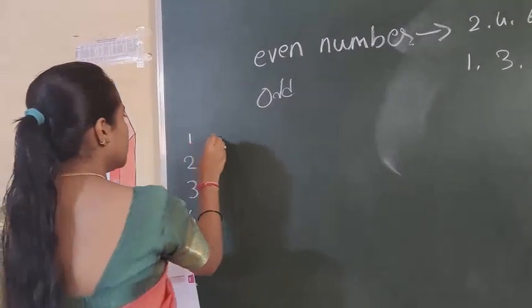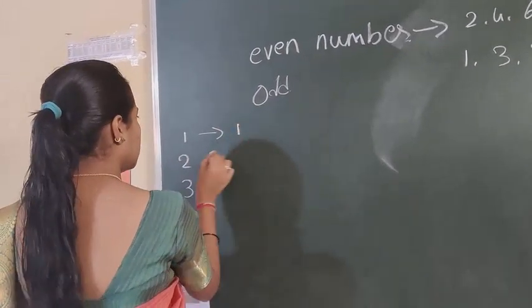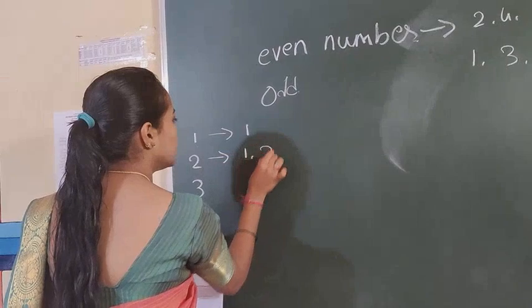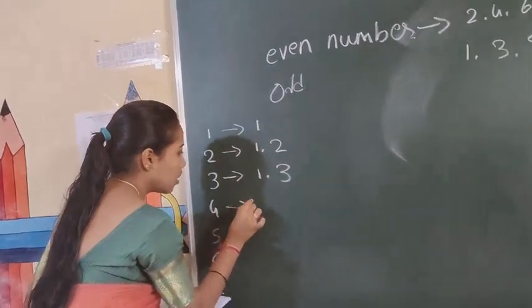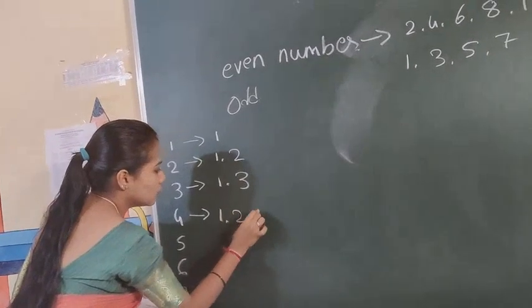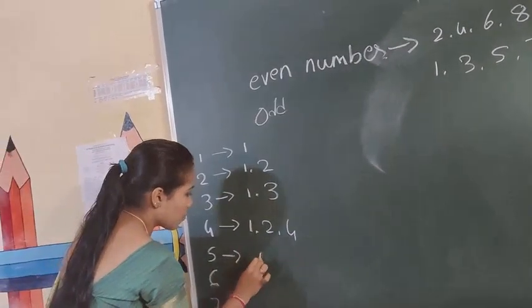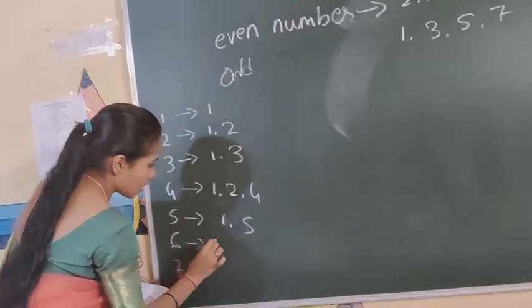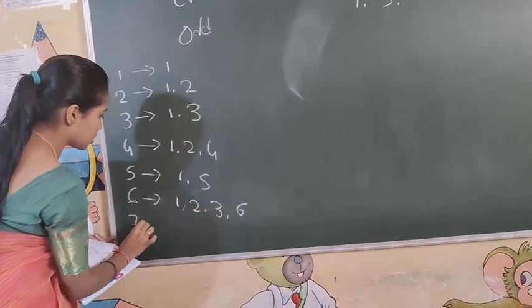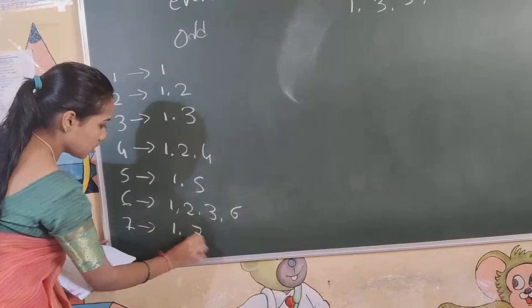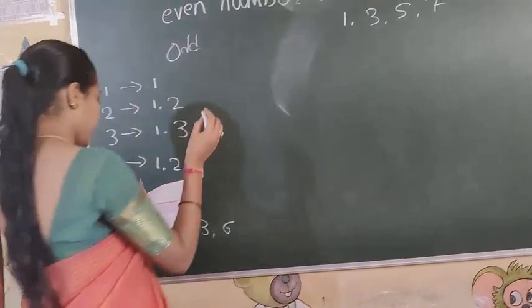One: 1. Two: 1, 2. Three: 1, 3. Four: 1, 2, 4. Five: 1, 5. Six: 1, 2, 3, 6. Seven: 1, 7.